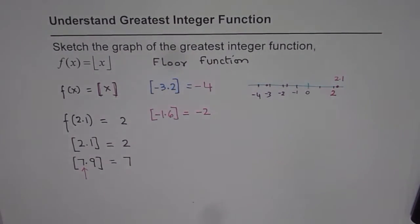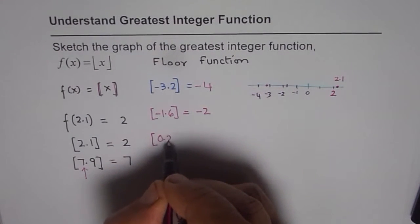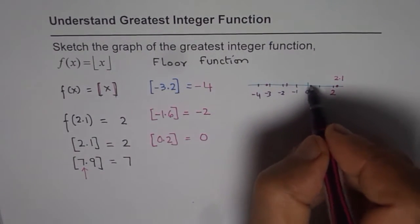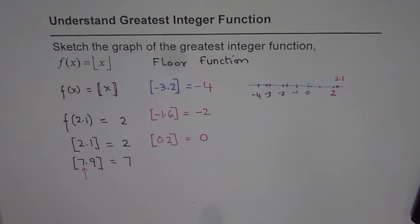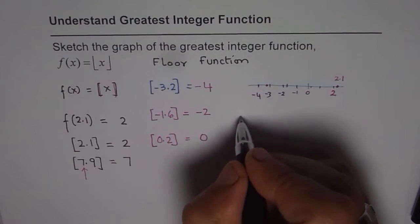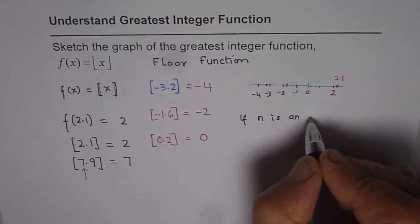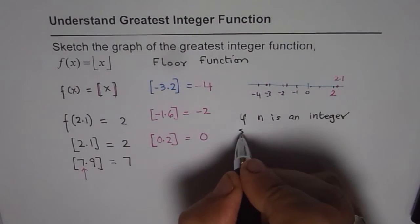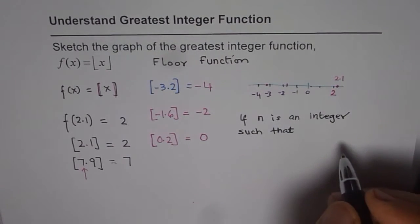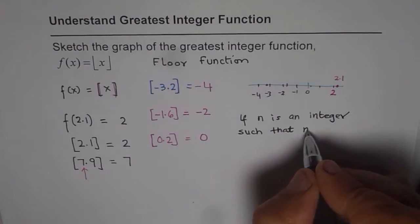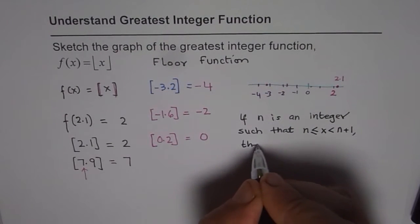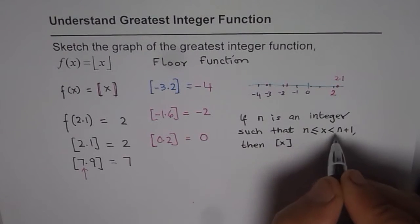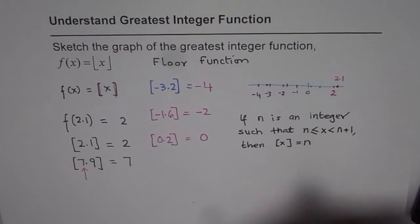What is the greatest integer value of 0.2? It is 0 — the integer value which is greatest up to this point is 0. Now, the mathematical way of writing this definition is: if n is an integer such that n ≤ x < n + 1, then the greatest integer value of x is equal to n.